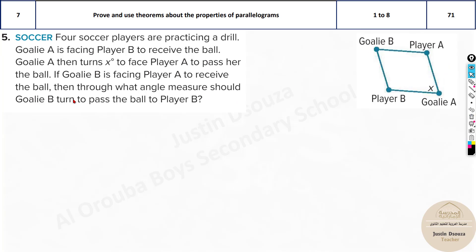Now we have some real world problems. Four soccer players are practicing a drill. Goalie A, where is he? Over here. Is facing player B to receive the ball. Goalie A then turns X degrees to face player A to pass her the ball. If goalie B is facing player A to receive the ball, then through what angle measure should goalie B turn to the player B? So this is like a parallelogram over here. This person's head gave the ball over here, and then he turned. So what happened is this angle is created.